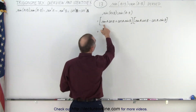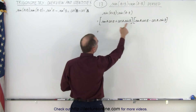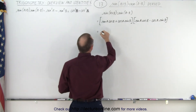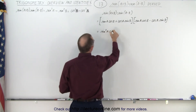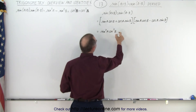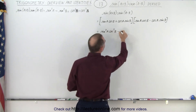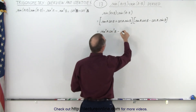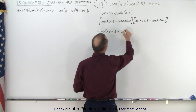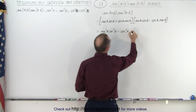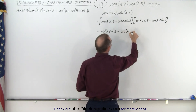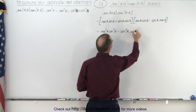Carrying out that multiplication gives us sine squared(a) times cosine squared(b), minus cosine squared(a) times sine squared(b).